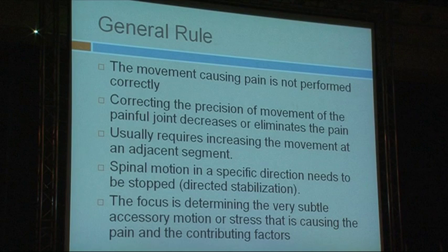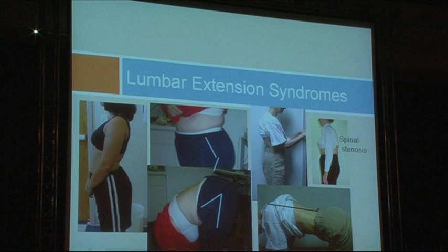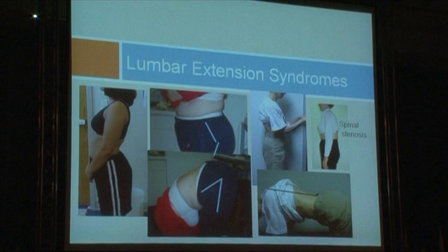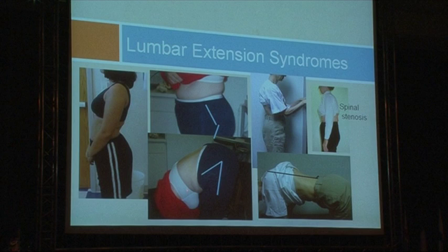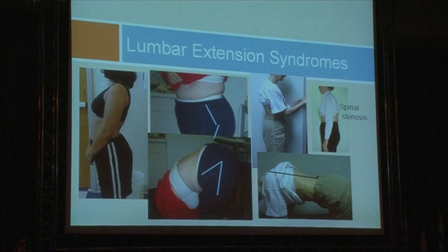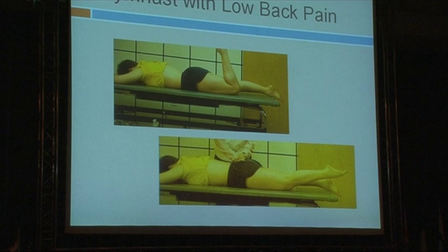The general rule is that movement causing pain is not performed correctly. We need to stop the movement causing pain and make the adjoining segment move better. The strategy for treatment — keep it stable. Here are examples of the lumbar extension syndrome. This first woman has an extension syndrome not because her hips are stiff, but because she's too flexible — she bends over much too easily. This one has an extension syndrome because of her kyphosis and is actually very stiff. This one has spinal stenosis, a problem with extension as all spinal stenosis patients have.